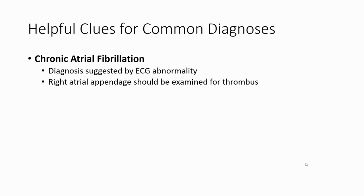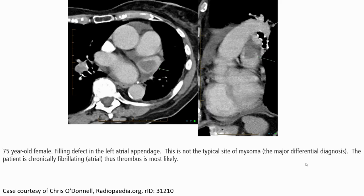The next cause is chronic atrial fibrillation, with diagnosis suggested by ECG abnormality. The right atrial appendage should be examined for thrombosis. On this CT image, a filling defect is seen in the left atrial appendage, most likely representing thrombosis.